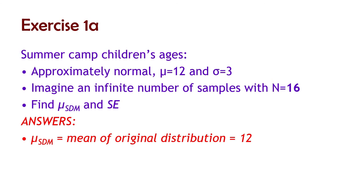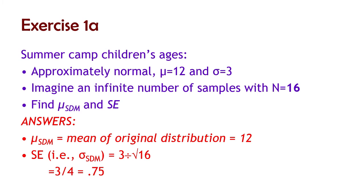The mean is going to be the same as the mean of the original distribution. We know the original distribution mean is 12 years old, so the sampling distribution mean is also 12 years old. The standard error — the standard deviation of the sampling distribution of means — is the original standard deviation, which is 3, divided by the square root of the sample size. The sample size is 16, so 3 divided by 4 is 0.75, three-quarters of one year.